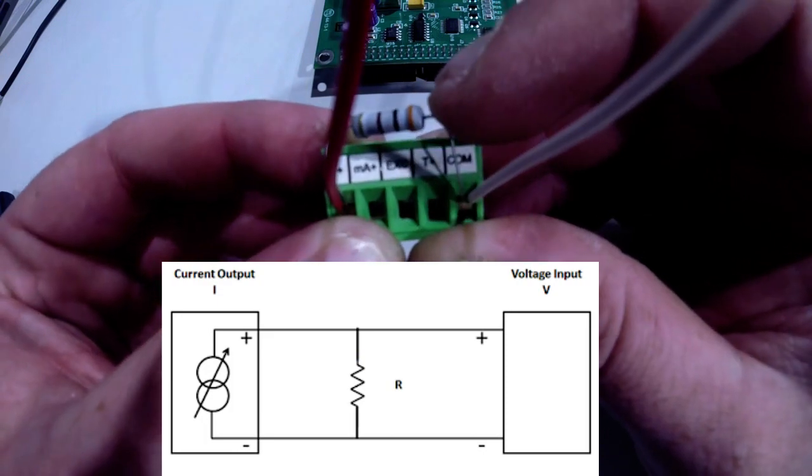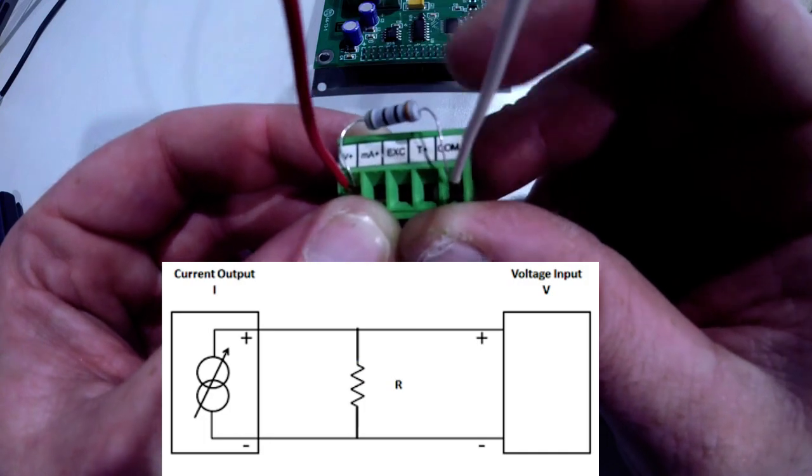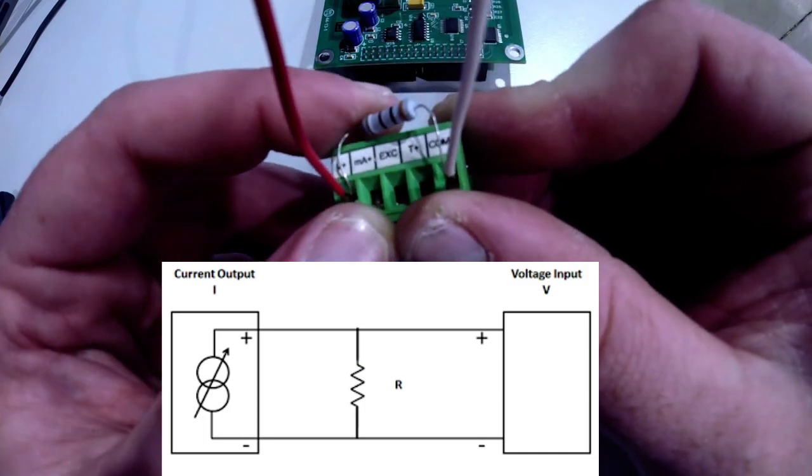I don't know if you've noticed the color code on this resistor, but this is actually a 250 ohm resistor. If we put two of these in series, we can actually make our 500 ohm resistor. So right now in this configuration, if we were outputting 0 to 20 milliamps, at zero we would have zero volts.